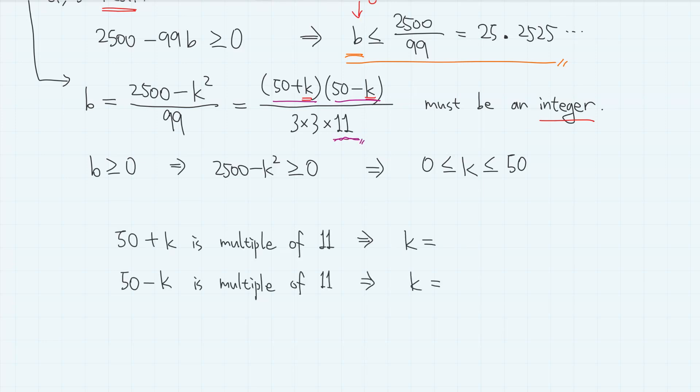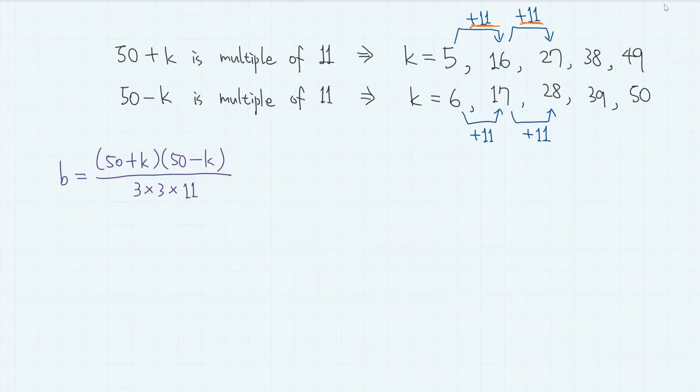In this way, we can find some small values of k that make either 50 plus k or 50 minus k the multiple of 11. For example, the smallest value of k that makes 50 plus k the multiple of 11 is k equals 5. And for 50 minus k, the smallest value is k equals 6. And we can find larger values by simply keep adding 11 to those values, which gives 16, 27, 38, and 49, because k cannot exceed 50. And from here, we have 17, 28, 39, and 50.